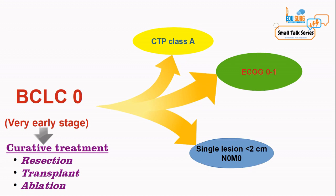Resection, transplant, and ablation are the only three curative treatment options for hepatocellular carcinoma. We will be seeing the treatment in a separate small talk, but this is just to give you an overview in a simplified way of BCLC. For very early stage, curative treatment is possible for patients with preserved liver function and performance status, with a single tumor less than 2 centimeters, node negative, and no metastasis.